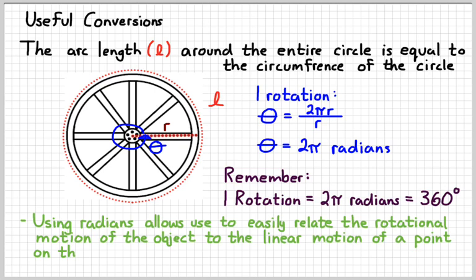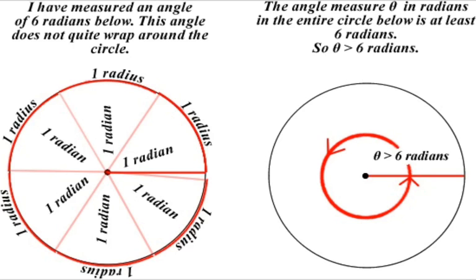We'll see situations throughout the next couple of weeks where we need to use both and go back and forth between the two. Since pi is a little more than 3, a complete circle — 2π radians — is a little more than 6 radians. It's frustrating that we can't get an exact conversion, but we should recognize that a circle is about 6 radians. That gives us an idea of how big a radian actually is — about 53 degrees.